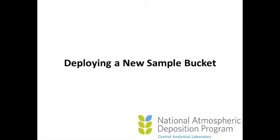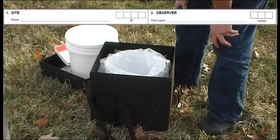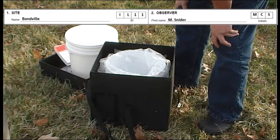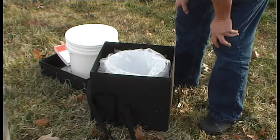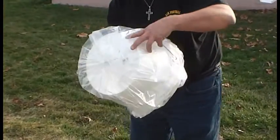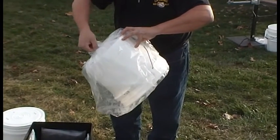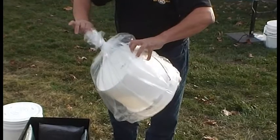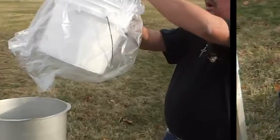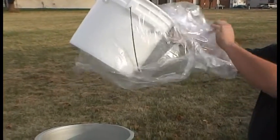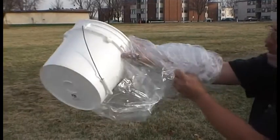Once the old sample bucket has been removed and the equipment cleaned and checked, you are ready to deploy the new sample bucket. Before you begin, record the necessary information to complete Blocks 1 and 2 on your field form for the current week's sample — these are Site and Observer, respectively — including your site name, site ID, your name, and initials. Carefully remove the new NADP bucket from the carrier and hold it by the handle. Remove the twist tie holding the bag closed and pull the bucket bag back over your arm and wrist so it acts as a glove. Before installation, turn the bucket upside down and shake it to ensure no residual water remains from the cleaning process.